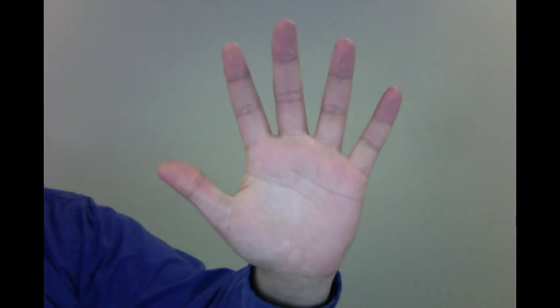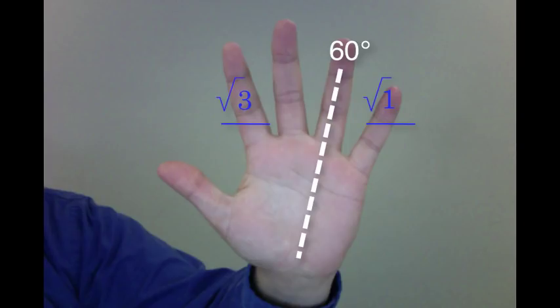Continuing on to the next angle, 60 degrees. Put down our 60 degree finger. Notice you have 3 fingers on one side, one on the other. So we have the numbers 3 and 1. We do the same thing as before. Take the square root, divide it by 2, simplify. We work with the values square root of 3 over 2 and 1 half. The thumb side is sine, so the sine of 60 is square root of 3 over 2, and the cosine of 60 is 1 half.